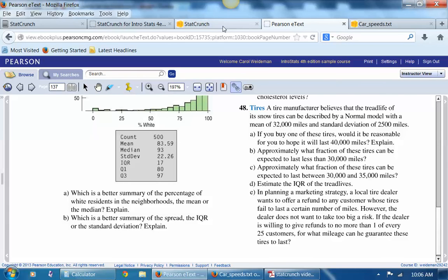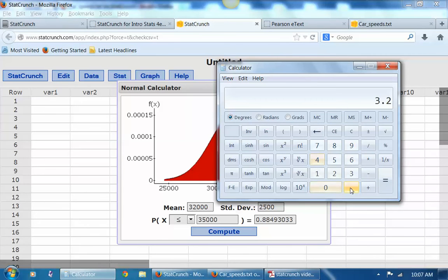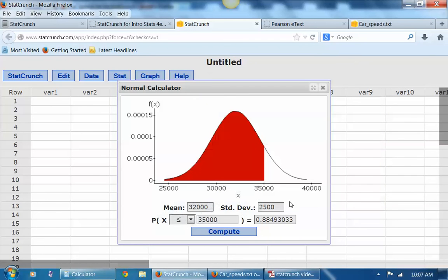What fraction would last between 30,000 and 35,000? Now, if you remember in the handout for this chapter, in order to do that, we have to do a subtraction on the probabilities. So let's go ahead and remember this, 0.212. And then we're also going to calculate the probability less than 35, which is 0.8849. So on my calculator, I'm going to take 0.8849 and subtract the 0.212. So about 67.3% of the tires are expected to last between 30 and 35,000 miles.